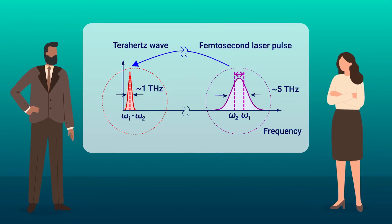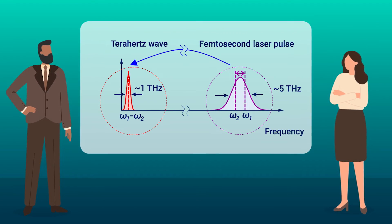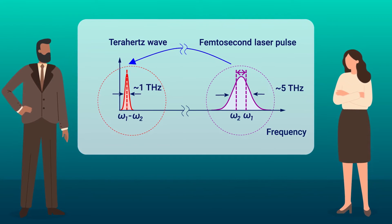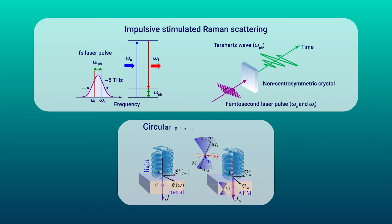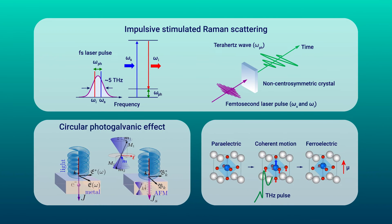Finally, the researchers reported new mechanisms for the generation of terahertz radiation. These included processes like impulsive stimulated Raman scattering, circular photogalvanic effect, and a photo-induced ferroelectric phase transition.